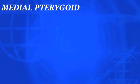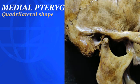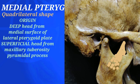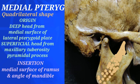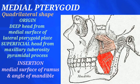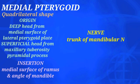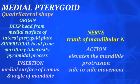The medial pterygoid is a quadrilateral muscle, also part of the infratemporal region, with two heads: a large deep head and a small superficial head. The deep head originates from the medial surface of the lateral pterygoid plate, while the superficial head arises from the maxillary tuberosity and the pyramidal process of the palatine bone. It passes backwards and laterally, inserting into the medial surface of the ramus of the mandible and the angle of the mandible. It is supplied by a direct branch from the trunk of the mandibular nerve. Its prime action is elevation of the mandible (closing of mouth), antagonistic to the lateral pterygoid, but together with the lateral pterygoid it also causes protrusion and side-to-side movement.